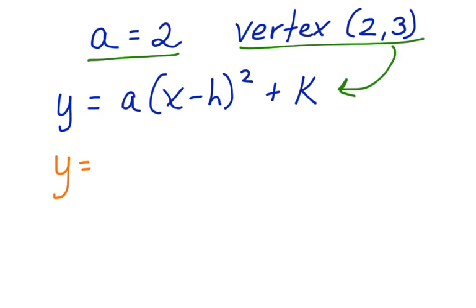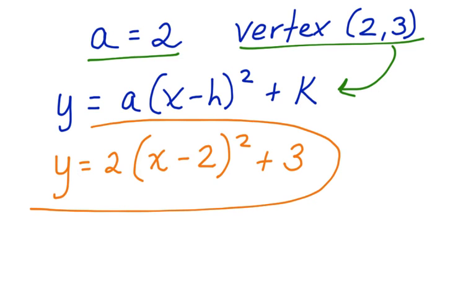So we have y equals a is 2, x minus 2 squared plus 3. And here we have the vertex form of the equation for the parabola.